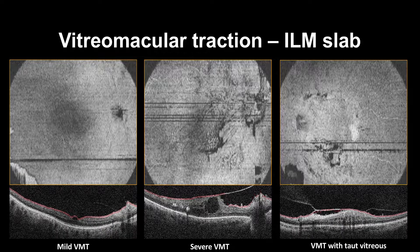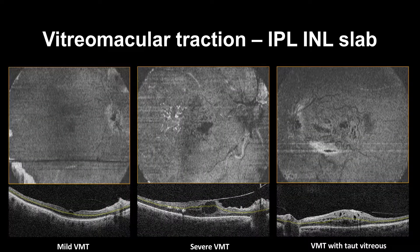In cases of vitreomacular traction, the ILM slab in mild cases will show no significant changes to a small hyperreflective circle. However, in more advanced cases, the vitreomacular traction will appear as curved hyperreflective folds directed to the adhesion, which appear as a cluster of hyperreflective folds. In cases of taut vitreo, the ILM slab will show a membrane-like adhesion. Please note the blink artifact. The IPL-ILM slab will show hyporeflective circular changes in vitreomacular traction cases inducing intraretinal cystic changes.